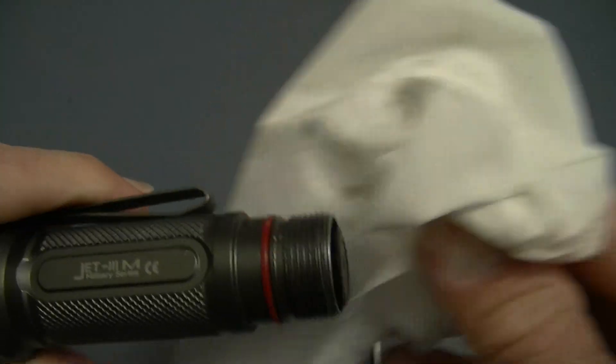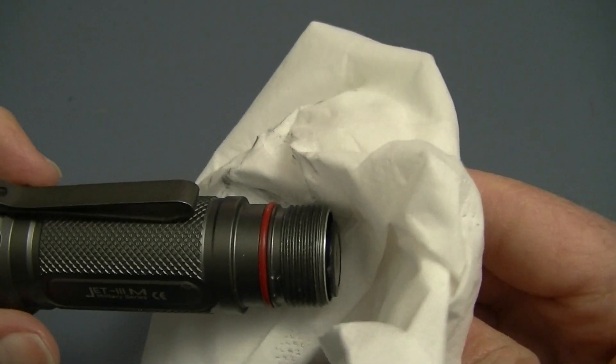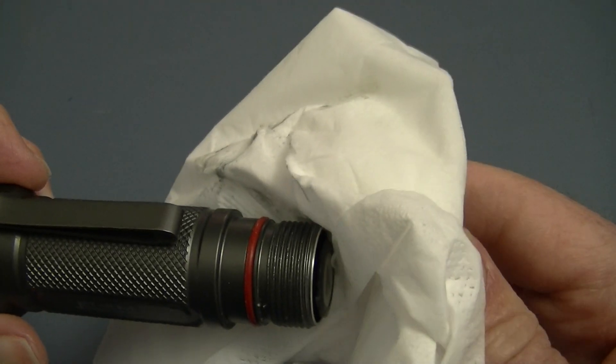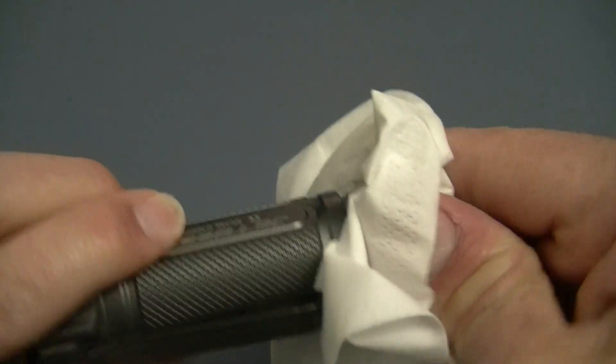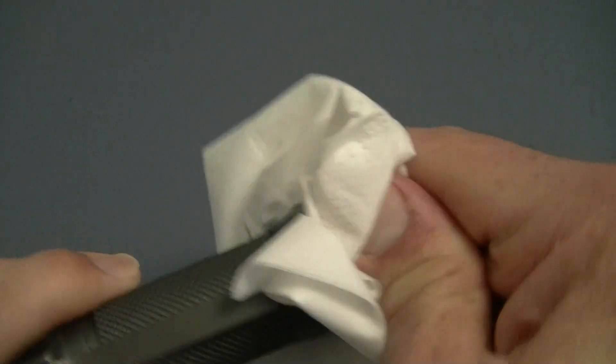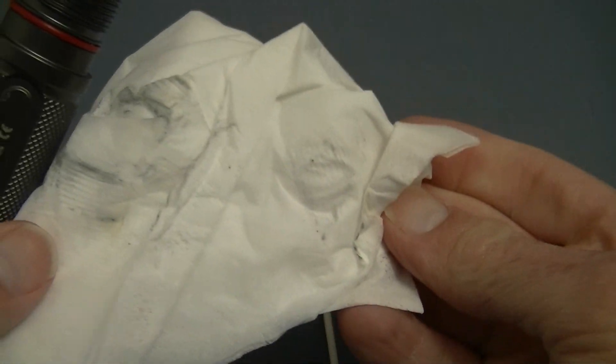It comes off very nicely, but you can see it is there. They do get that way just from changing batteries and so forth, just general use and mainly taking the cap on and off. So anyway, take a piece of Kleenex or cloth and try to rub it as cleanly as you can.